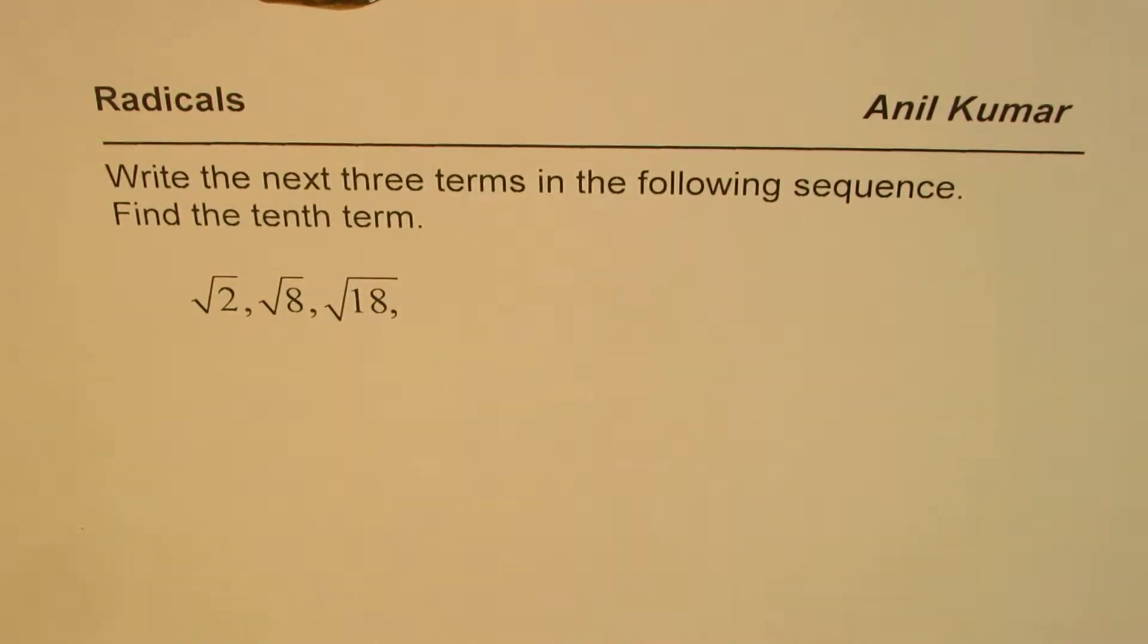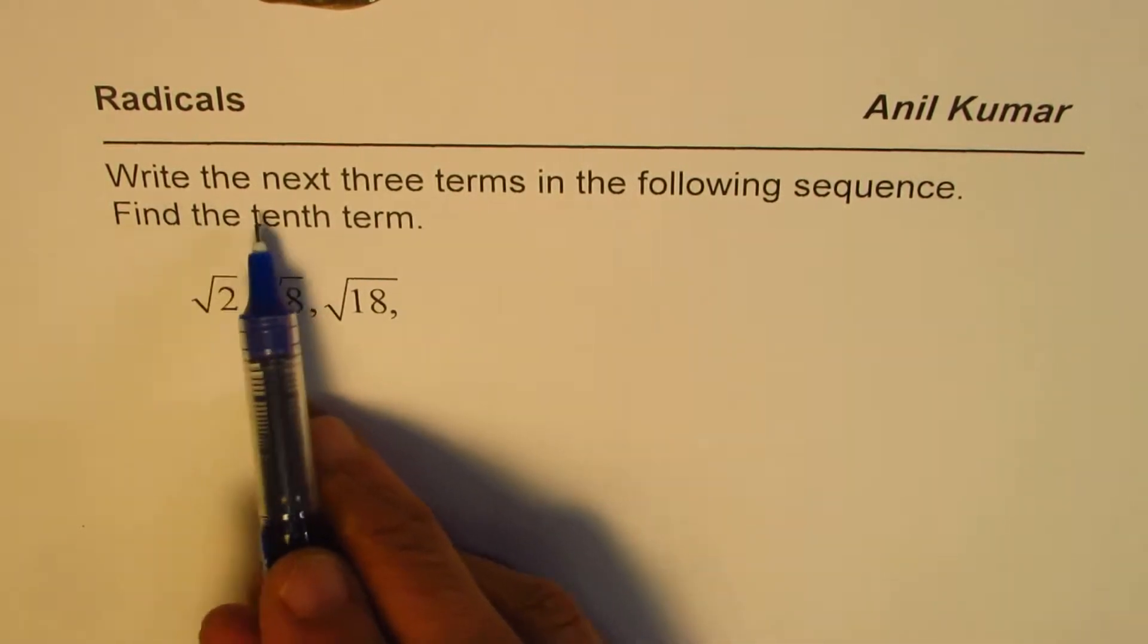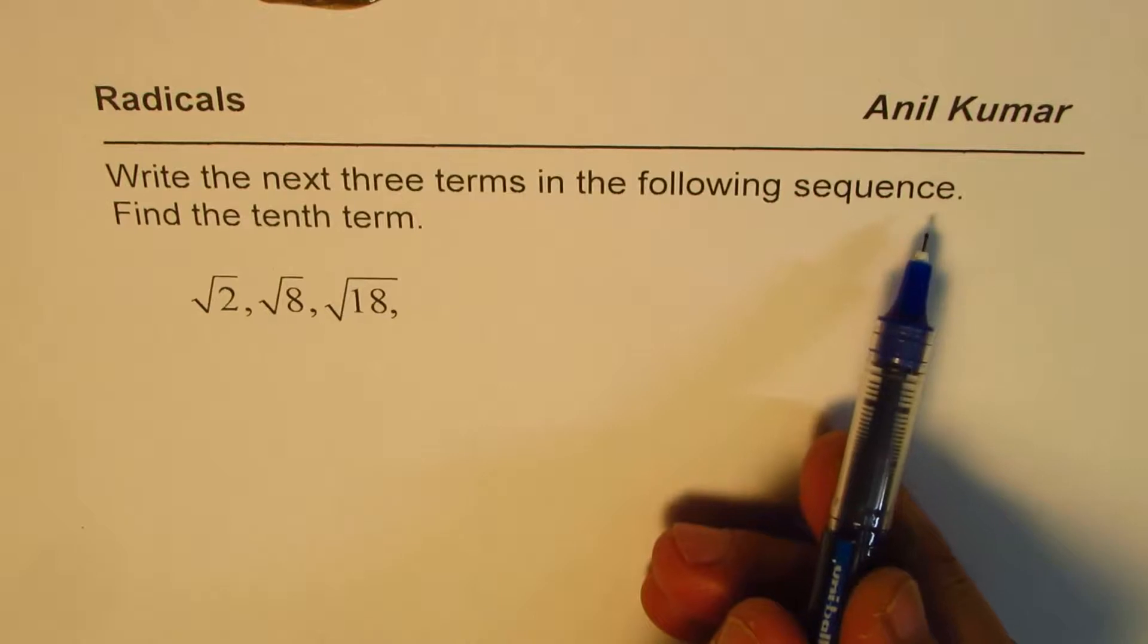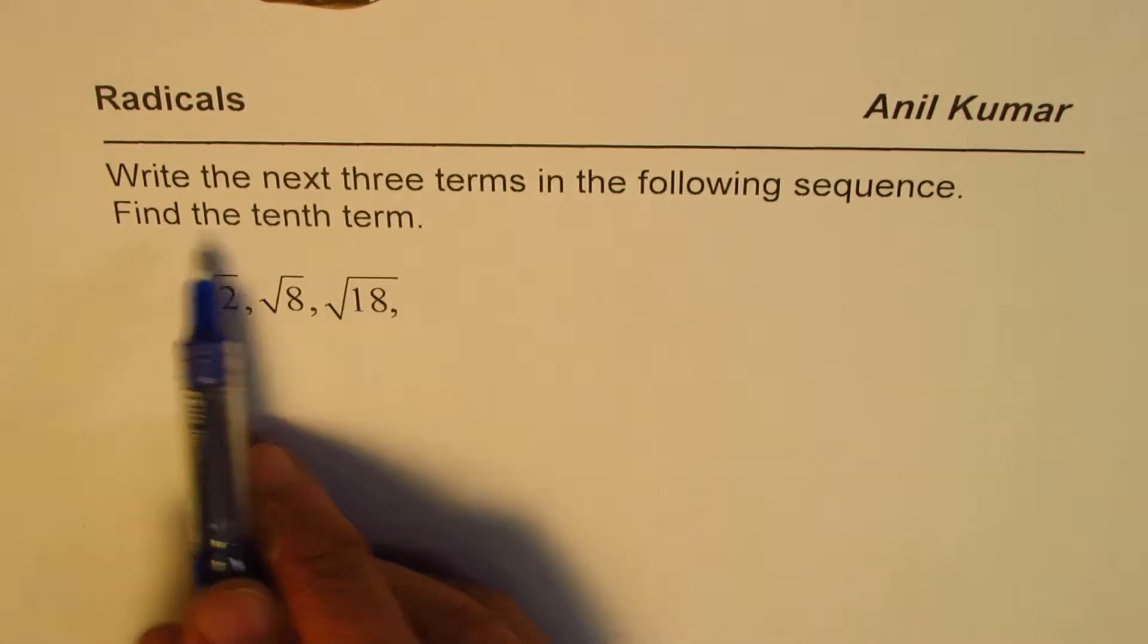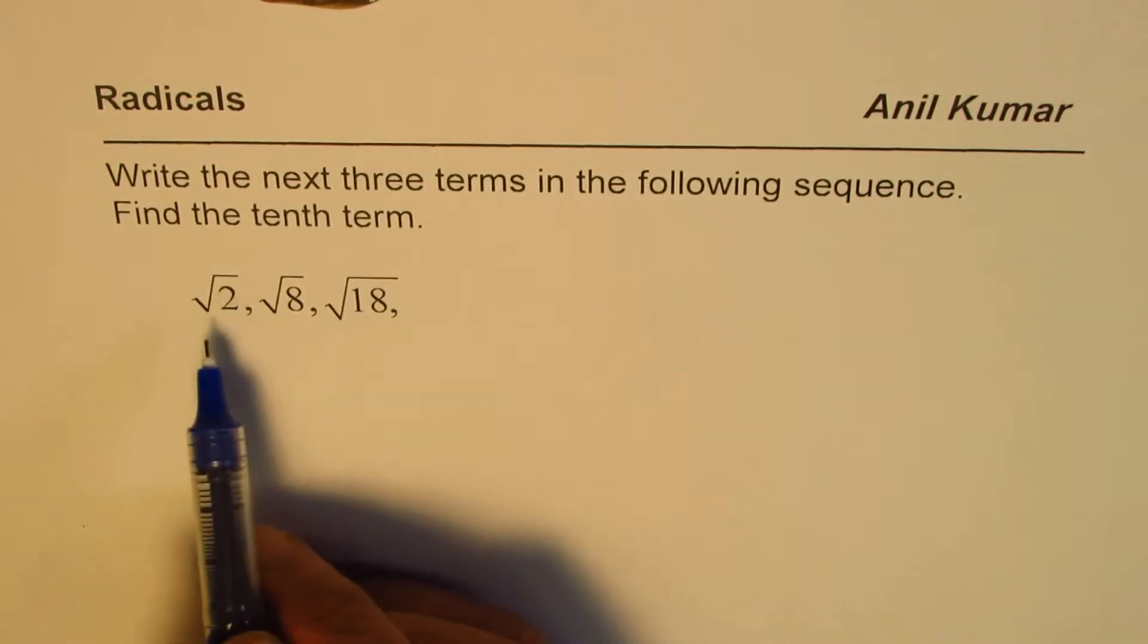I'm Anil Kumar sharing with you a very interesting question on radicals. The question is: write the next three terms in the following sequence and find the 10th term. So we are given the first three terms which are square root of 2, square root of 8, and square root of 18.